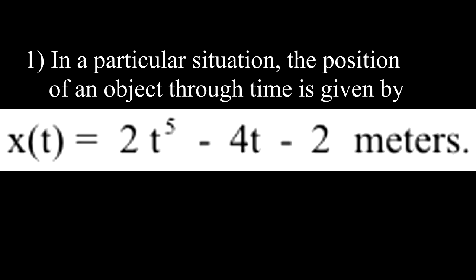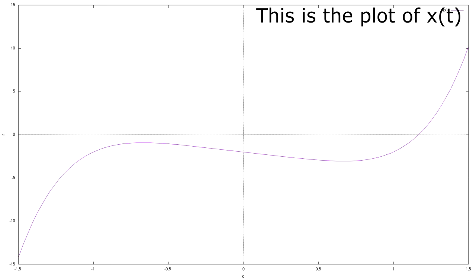In a particular situation, the position of an object through time is given by x(t) equals 2 times t to the 5th minus 4t minus 2, and this is given in meters. This is a plot of x(t).